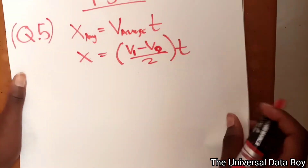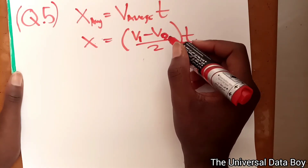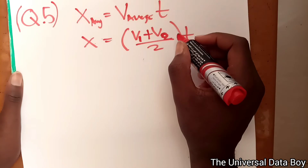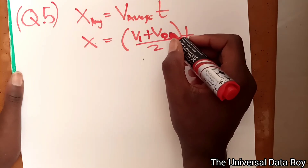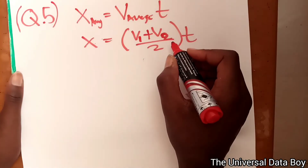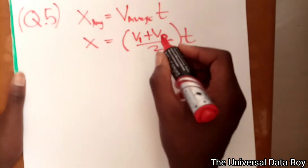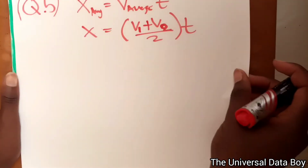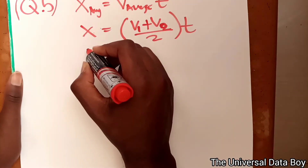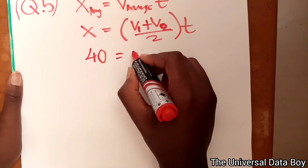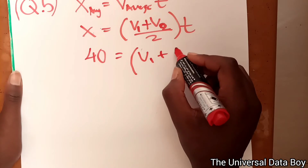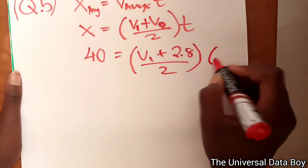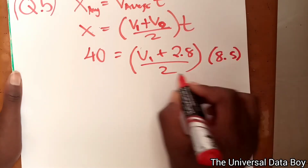We have two velocities in this case, and the velocity we are looking for is the original speed. We can label it v1 since we are taking the average of initial plus final. Plugging in values: x equals 4.0, so 4.0 is equal to v1 plus the final velocity 2.8, over 2.